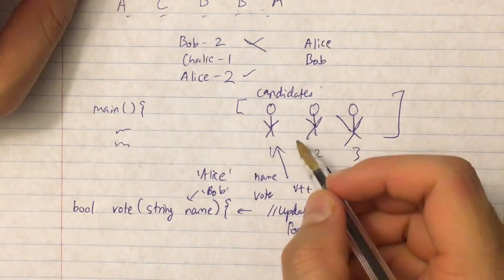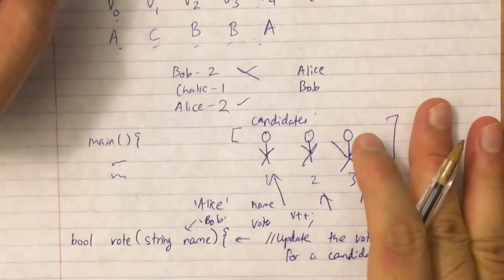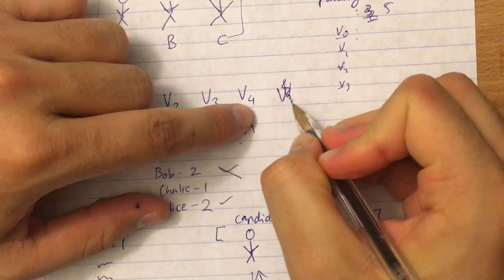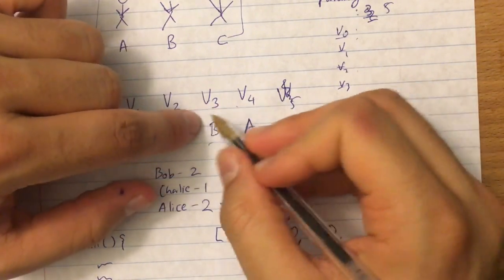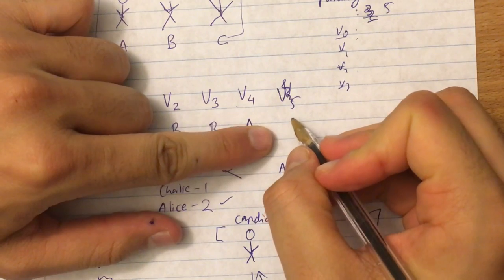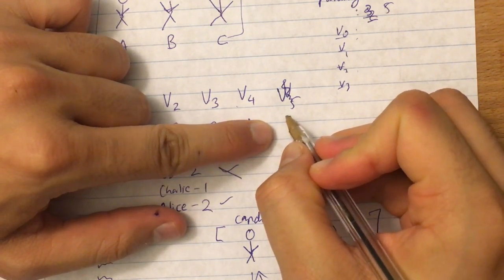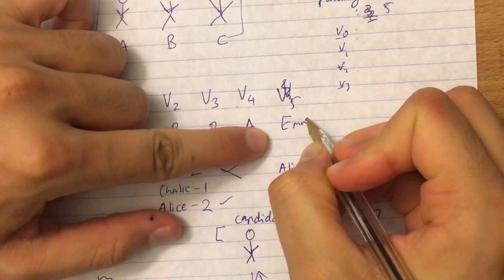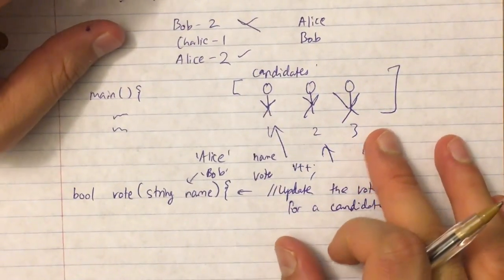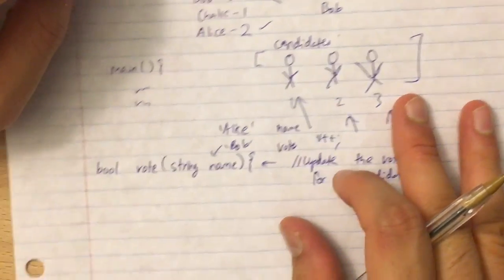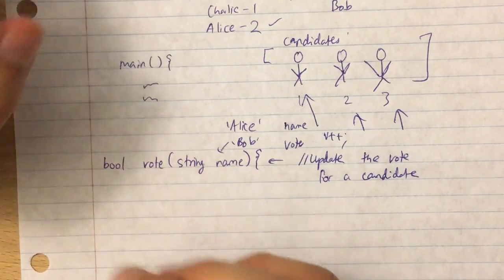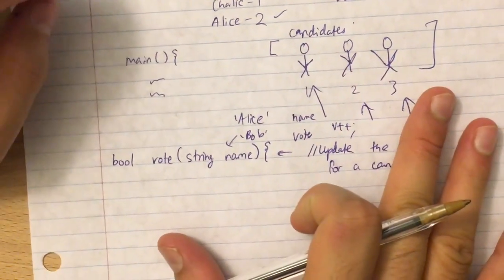If the candidate is not found — say voter five votes for Emma and there's no Emma in the candidates — it would return false. That's what the boolean represents: whether the vote is actually registered or not.